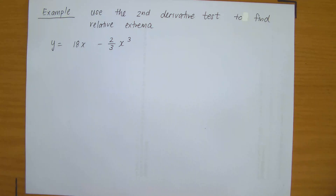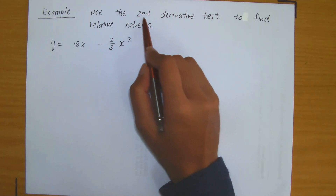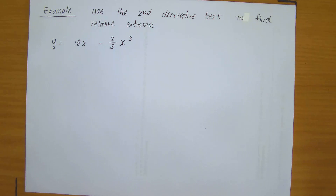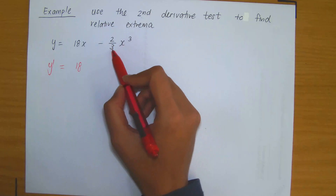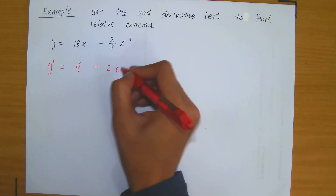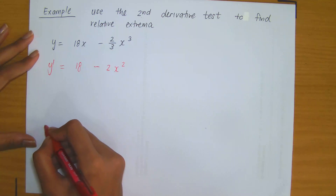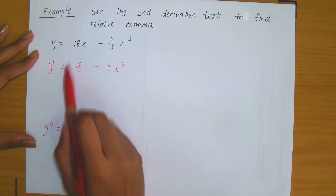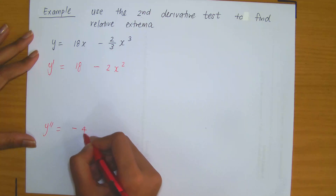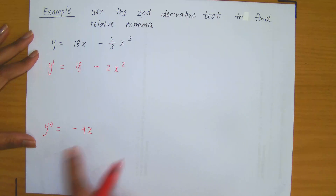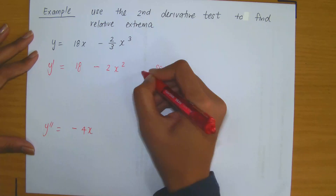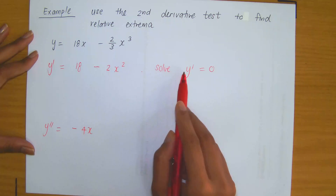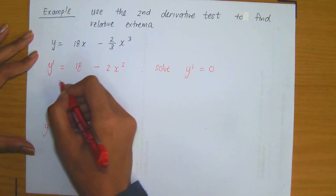We know we're using the second derivative test, which means we need to compute the second derivative as well as find the critical values. Let's compute the first derivative. The derivative of 18x is 18, and the derivative of negative two-thirds x cubed is minus 2x squared. Now proceeding to compute the second order derivative: the derivative of 18 is 0, and the derivative of minus 2x squared is minus 4x.